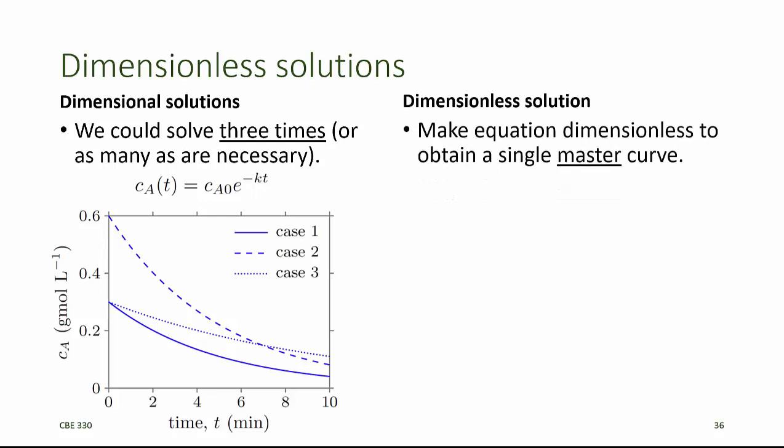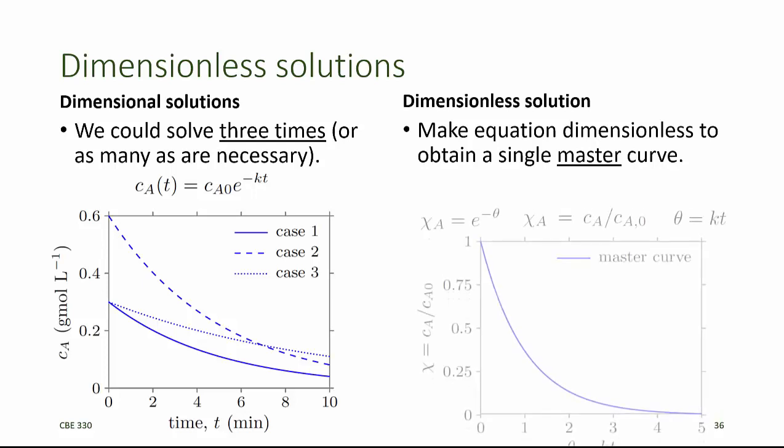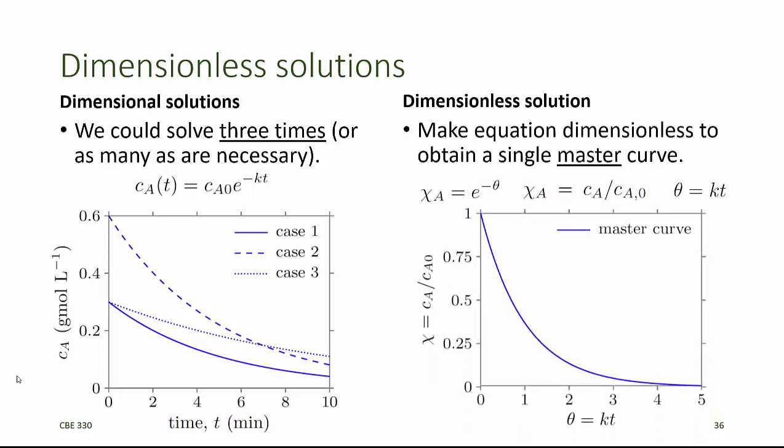The dimensionless solution is obtained by making the equation dimensionless, and in this case, it results in a single master curve. To make the equation dimensionless, we'll divide both the right-hand side and the left-hand side by CA0. If we do that, we'll get concentration divided by concentration on the left-hand side. We'll call that the dimensionless concentration using the Greek letter chi, with subscript A.